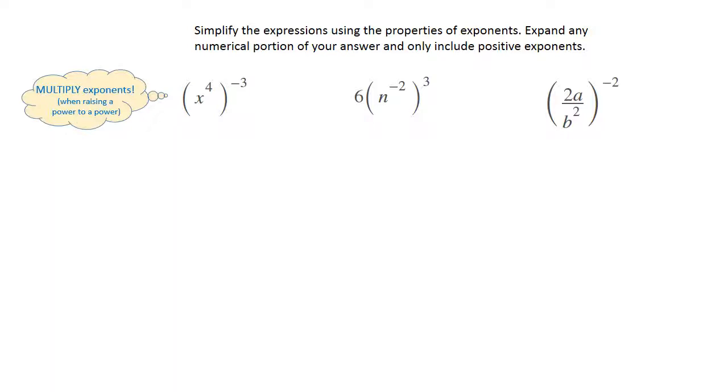So in the first example, the 4 is being raised to the negative 3, so you're going to multiply those.